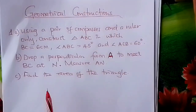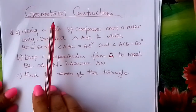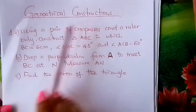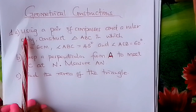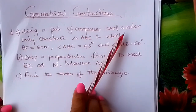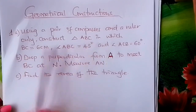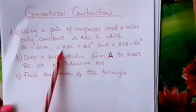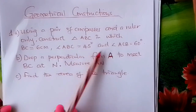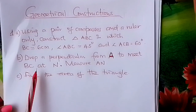Hello learners, welcome to Form 1 Mathematics. I would like us to look at a problem to do with geometrical constructions. Using a pair of compasses and a ruler only, construct triangle ABC in which BC is 6 centimeters, angle ABC is 45 degrees, and angle ACB is 60 degrees.